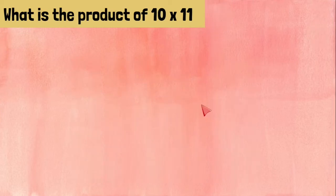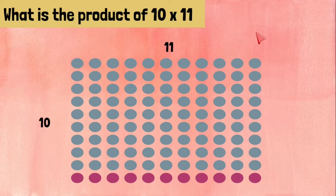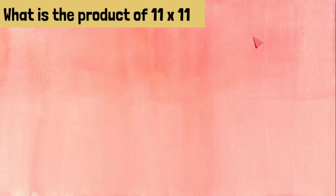10 times 11. We need 10 rows with 11 on each row. We know the blue ones make 99, and if we add 99 plus 11 more we get 110. 10 times 11 equals 110.